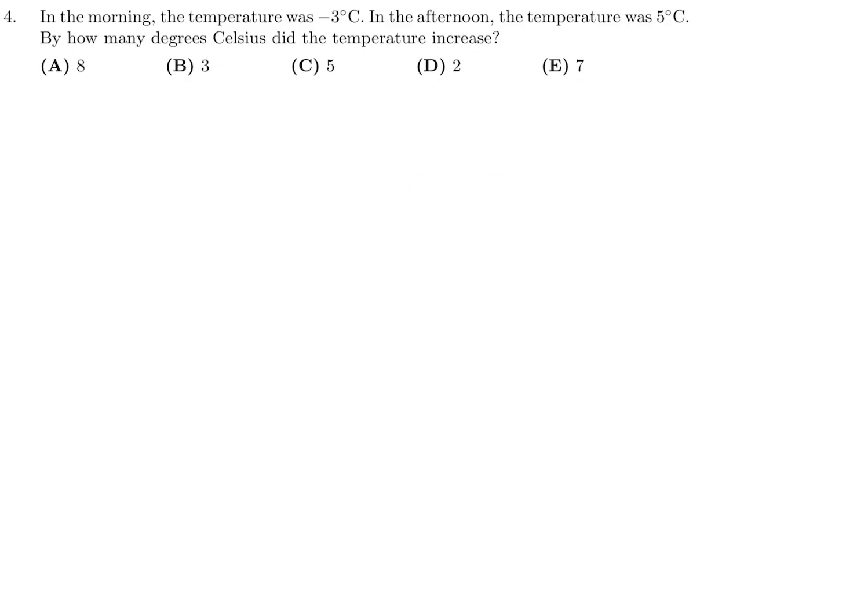In the morning, the temperature was minus 3 degrees Celsius. In the afternoon, the temperature was 5 degrees Celsius. How many degrees Celsius did the temperature increase? So we went from minus 3 to 5. So on the number line, that would be a distance of 8.